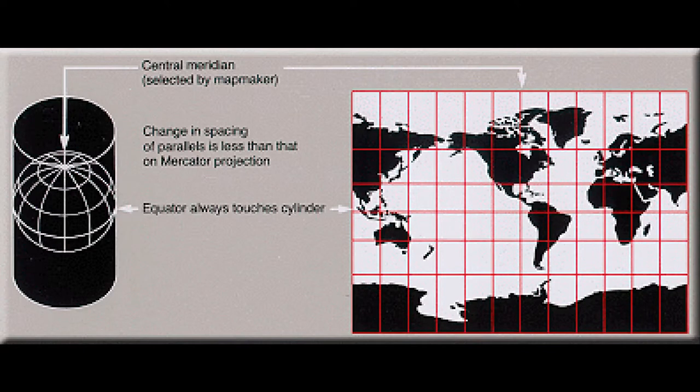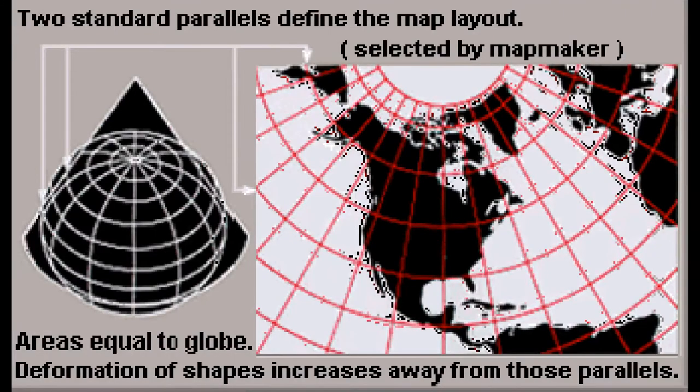So cartographers have to come up with a trick to take the Earth, which is round. The way they do that is to imagine that the Earth is a shape which can be flattened, like a cylinder or a cone, and then draw the map based on how the lines of latitude and longitude look on the imaginary shape. This is the art and science of cartographic projection.